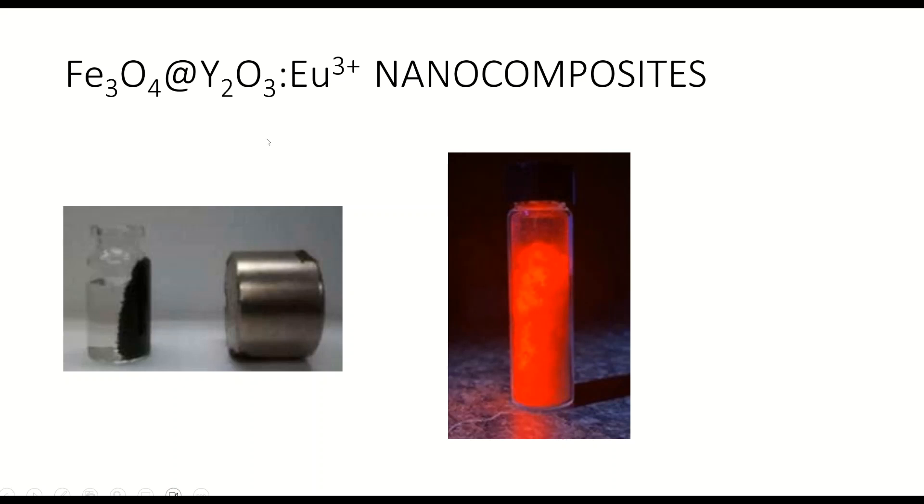On the other hand, the photoluminescent material, also called phosphor, could emit light of a certain color depending on the dopant. In this case, we use europium because we wanted to obtain this red color.